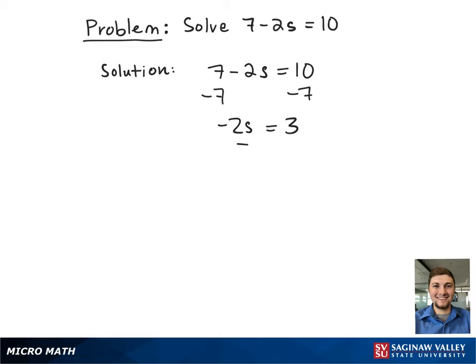Then we need to divide both sides by negative 2 to cancel out the left-hand side and get s by itself. This leaves you with s equals negative 3 halves, which is your final answer.